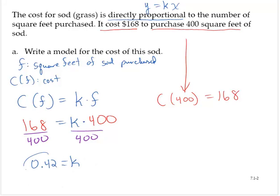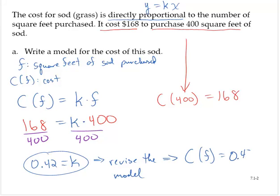Now we have the value of k. Let's revise the model. So then C(f) is equal to 0.42f. So there's the model for this problem.